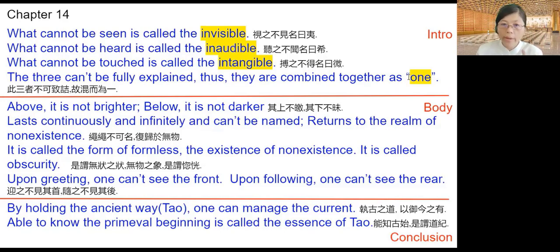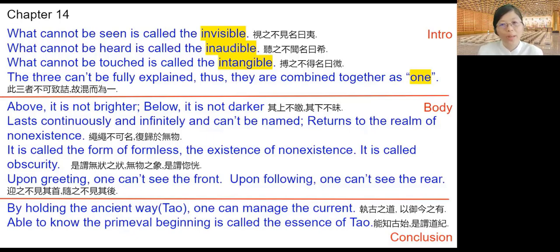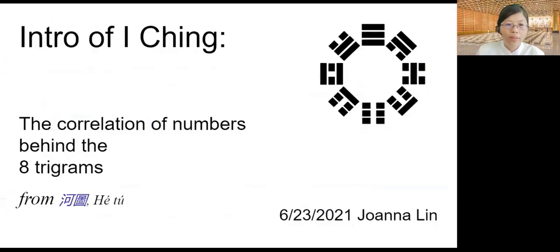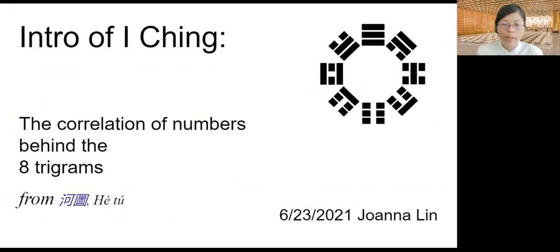Therefore, 'one' is very important. One is an important concept in Yijing too. This session today is really from this verse: 'The three cannot be fully explained. They are combined together as one.' That's why I came up with this topic: the correlation of numbers behind the eight trigrams. Since we are all new to Yijing, I thought this would be a good place to start.